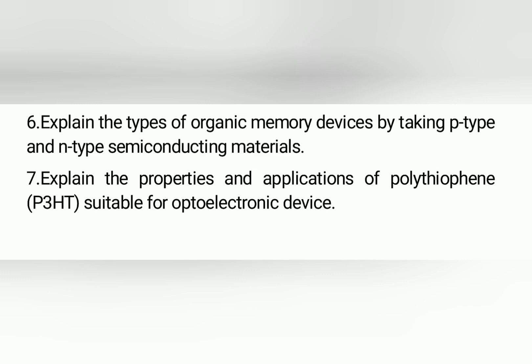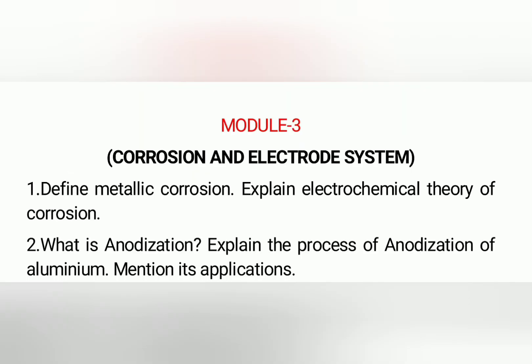These are the most important questions in the second module. Next, I go with the third module. The first question is: define metallic corrosion and explain the electrochemical theory of corrosion. The second question is: what is anodization? Explain the process of anodization of aluminium and also mention its applications.